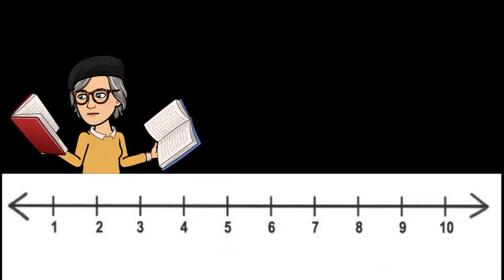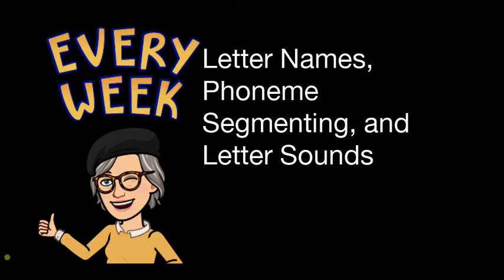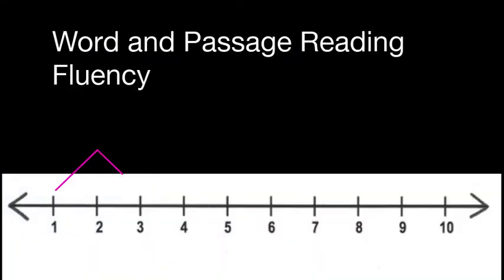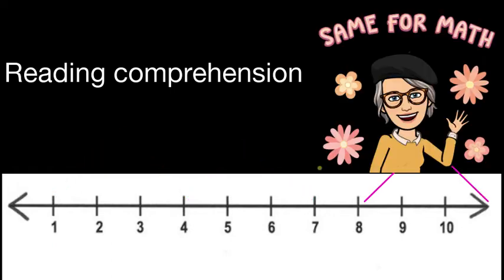For example, with reading skills like letter names, phoneme segmentation, and letter sounds, testing can be as often as every week or two because students can make rapid progress in these areas with in-depth interventions. But for word passage and reading fluency, this takes a little longer for improvement — maybe not more than every other week. For multiple choice reading comprehension, every three to four weeks. The same is true for math — about every three to four weeks.